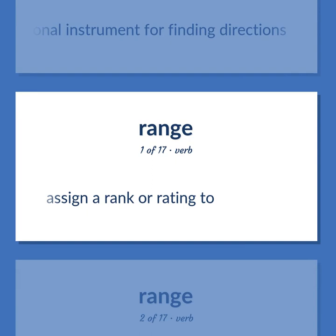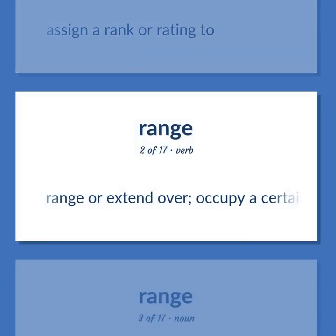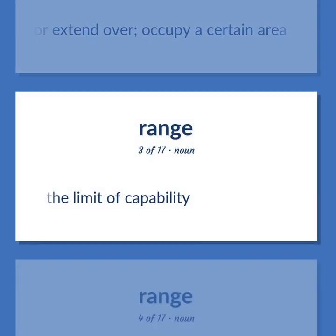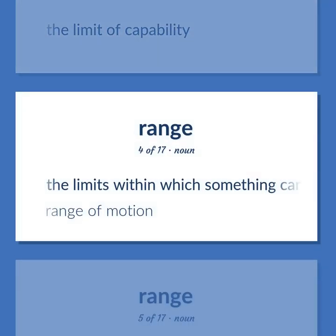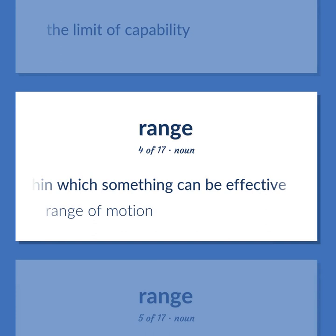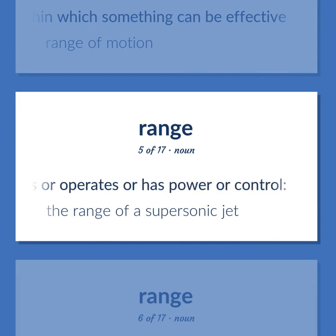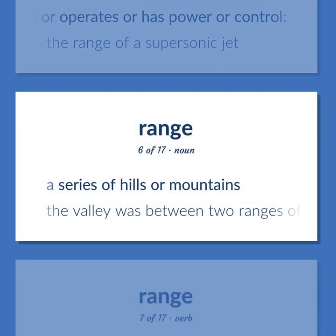Range: To assign a rank or rating. To extend over an area. The limit of capability. The limits within which something can be effective. Range of motion. An area in which something acts or operates — the range of a supersonic jet. A series of hills or mountains — the valley was between two ranges of hills.